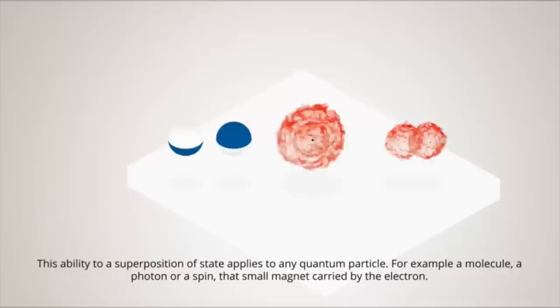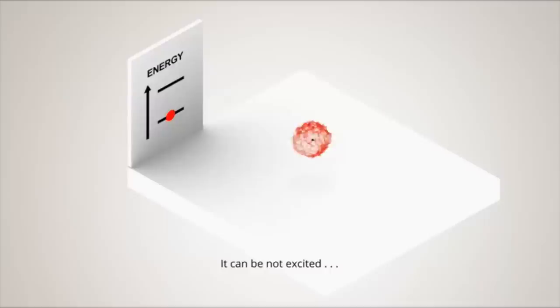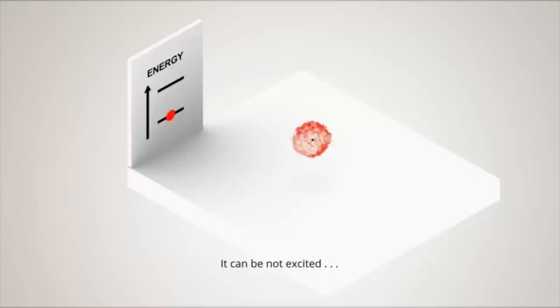And it turns out that to achieve the remarkable efficiency of photosynthesis, algae and their evolutionary descendants, plants employ quantum superposition so that the energy can simultaneously travel along all possible paths to the reaction center. That way, it always gets there on time.